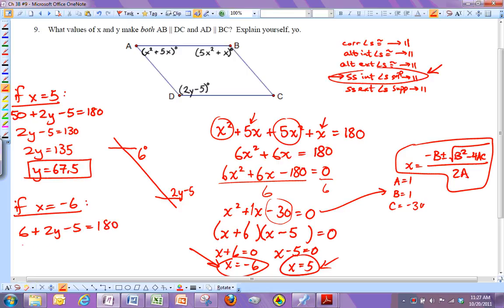So I'm going to get 1 plus 2y equals 180. So 2y is going to be 179. And so y is going to end up being 89.5.